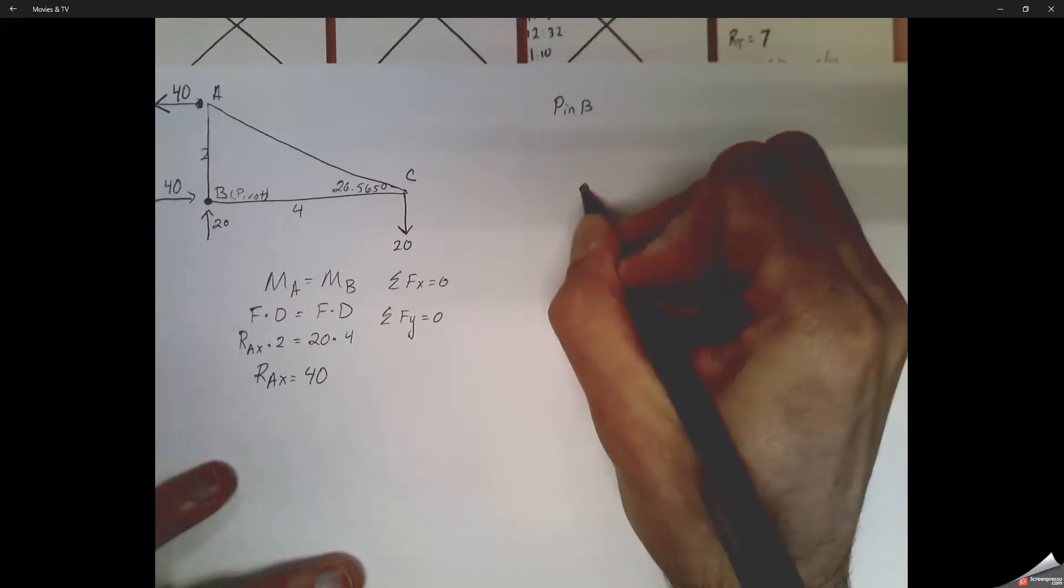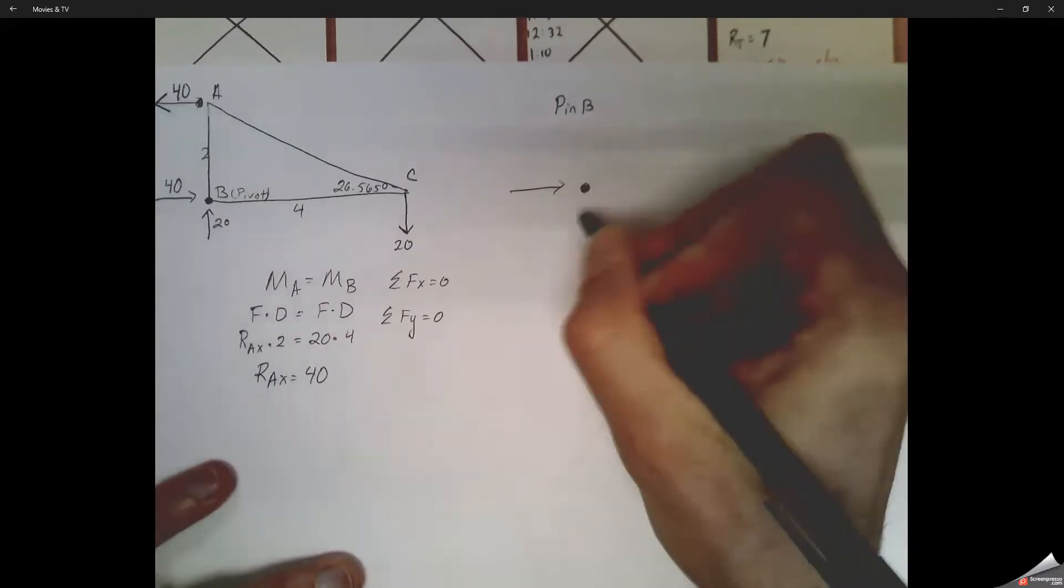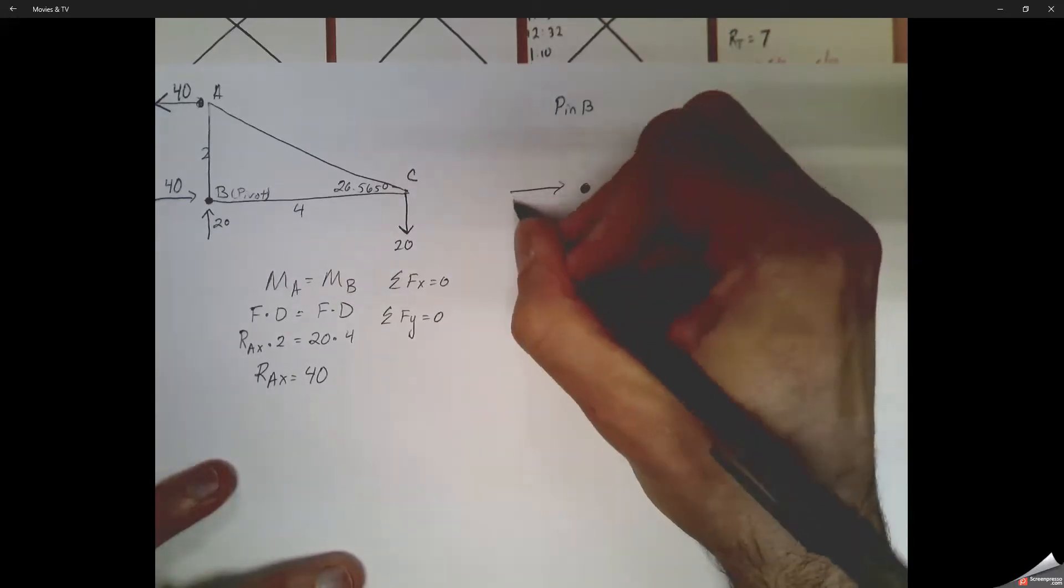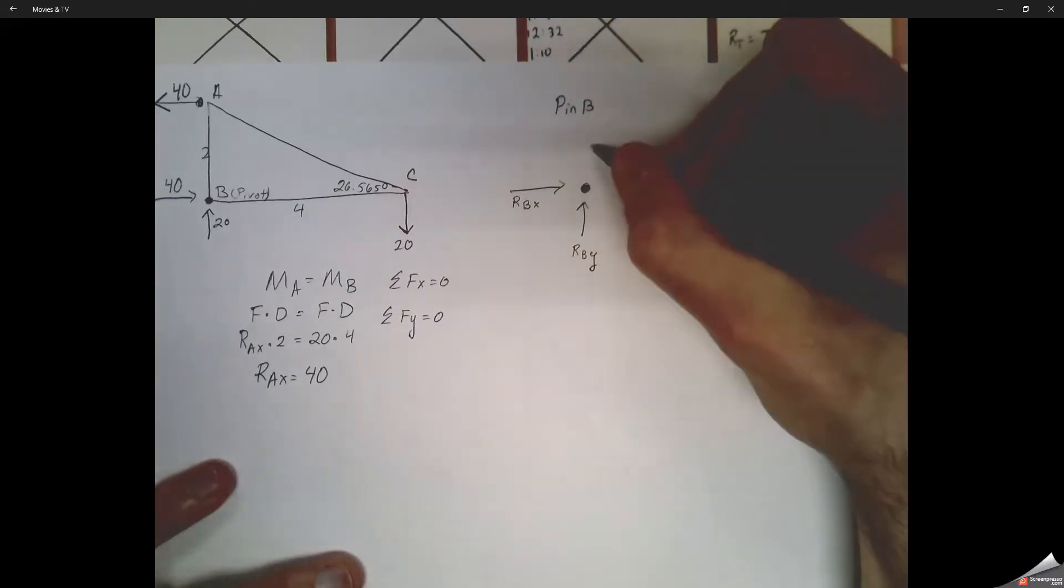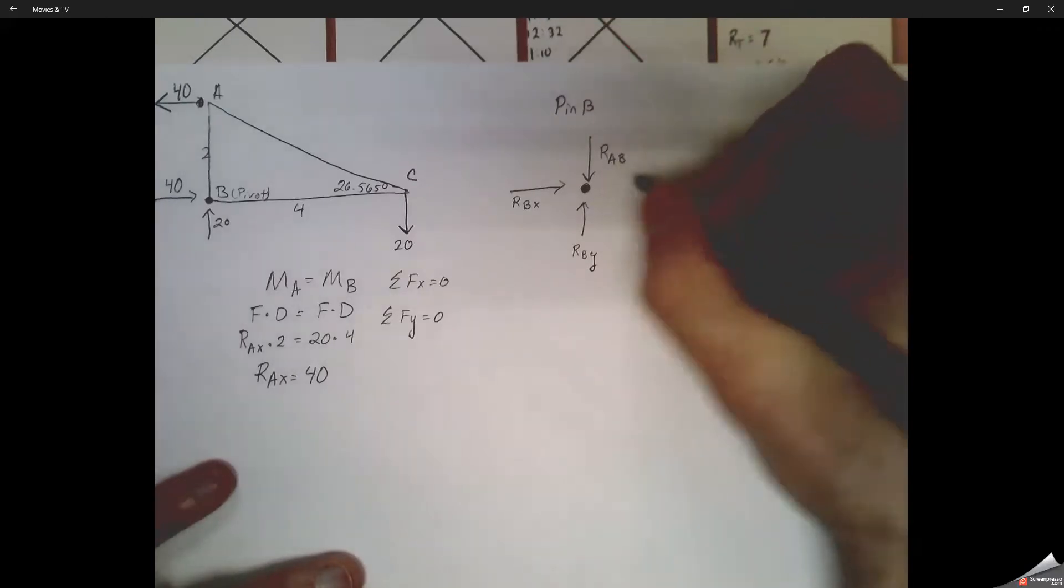So now we're going to isolate and look at just pin B. We're only going at the forces and the members that are intersecting at that B. So we've got the reaction force at pin B in the x direction. And then we've got the reaction force at pin B in the y direction. We have here member AB, so we have a force of member AB. We're going to assume under compression. So we have the reaction force of member AB, and that right there is in the y direction.